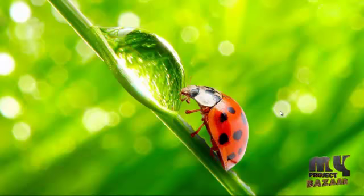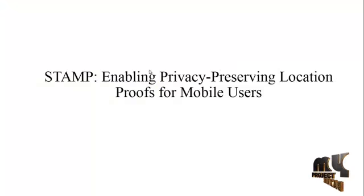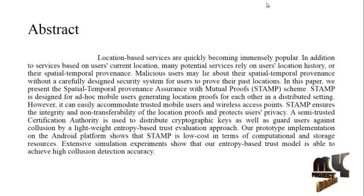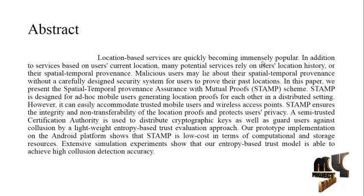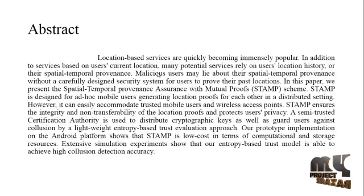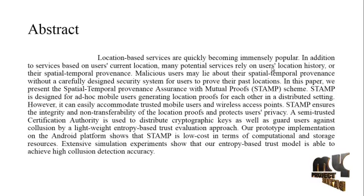Welcome to myprojectbazaar.com. Our project title: STAMP — Enabling Privacy Preserving Location Proof for Mobile Users. Our project abstract: location-based services are quickly becoming immensely popular. In addition to services based on users' current location, many potential services rely on users' location history or their spatial-temporal provenance.